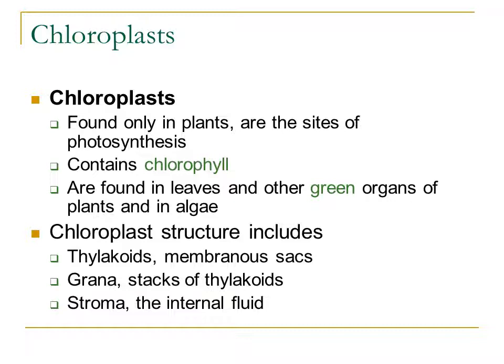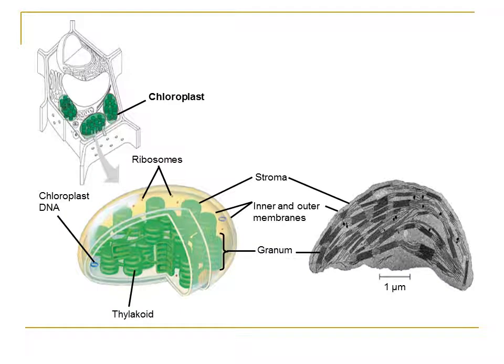Chloroplasts are really important to plant cells. Chlorophyll — the green pigment that gives plants their color — is found within an organelle called a chloroplast, and chloroplasts are found only in plants. Inside a chloroplast you have individual stacks called thylakoids, which are stacked on top of each other to form structures called grana. Within the chloroplast there is also a liquid fluid called the stroma.